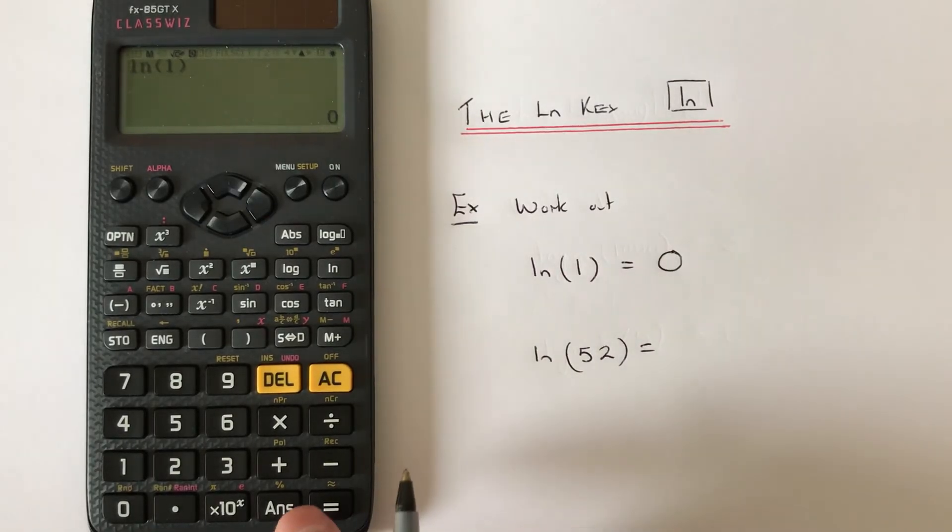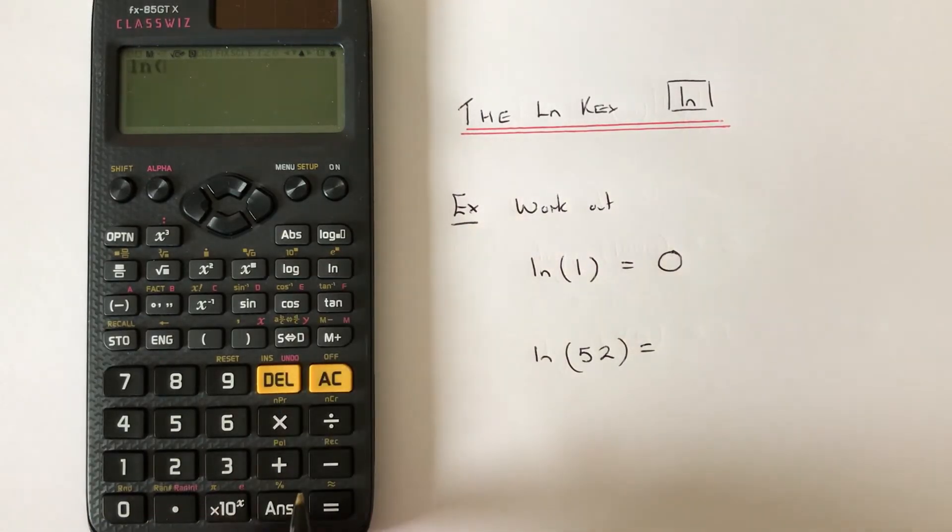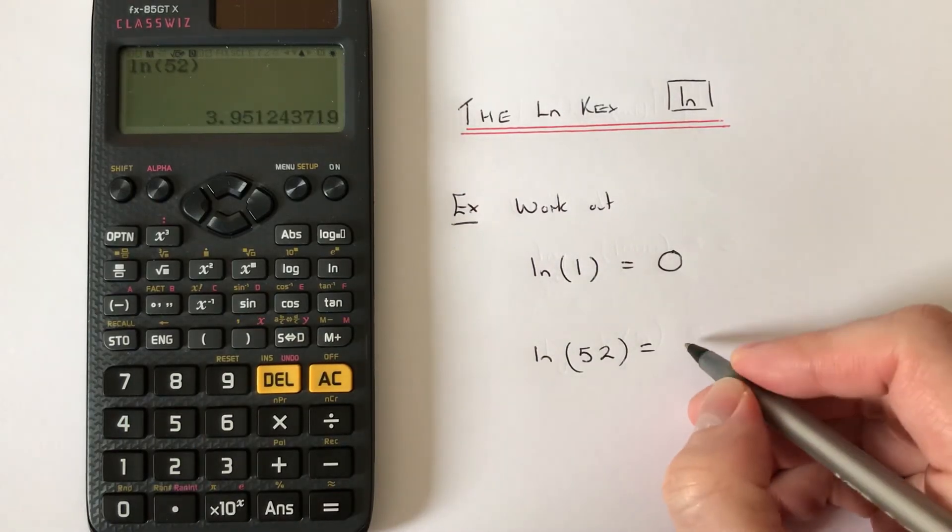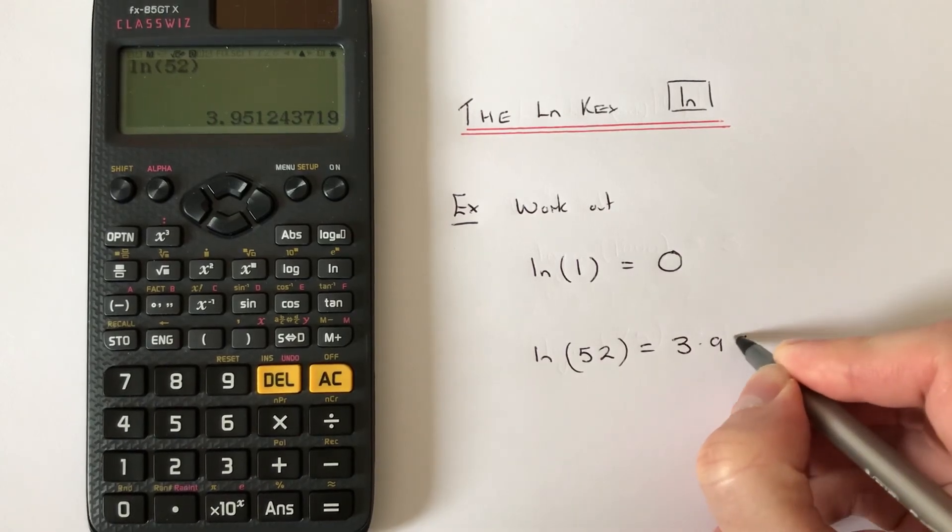And let's do one more example then. So if we press AC, this time we need to natural log 52. So close your bracket again, press equals and we can round this one off to two decimal places. So we get 3.95.